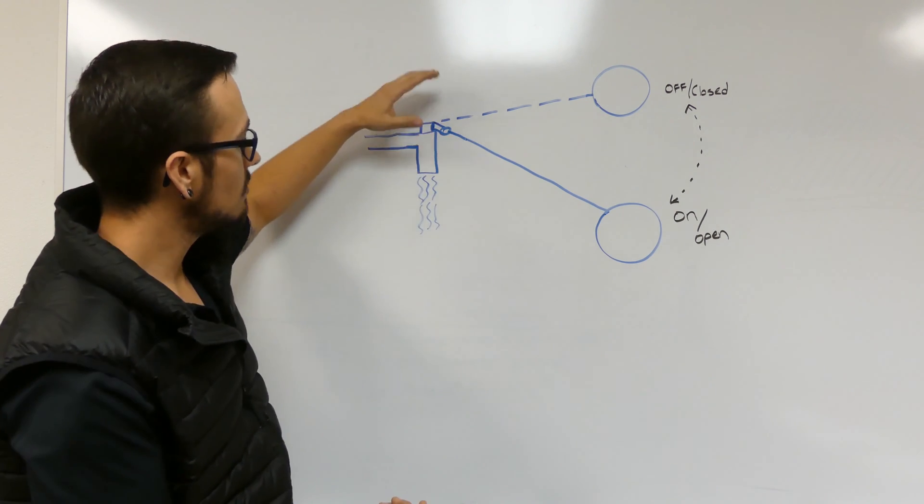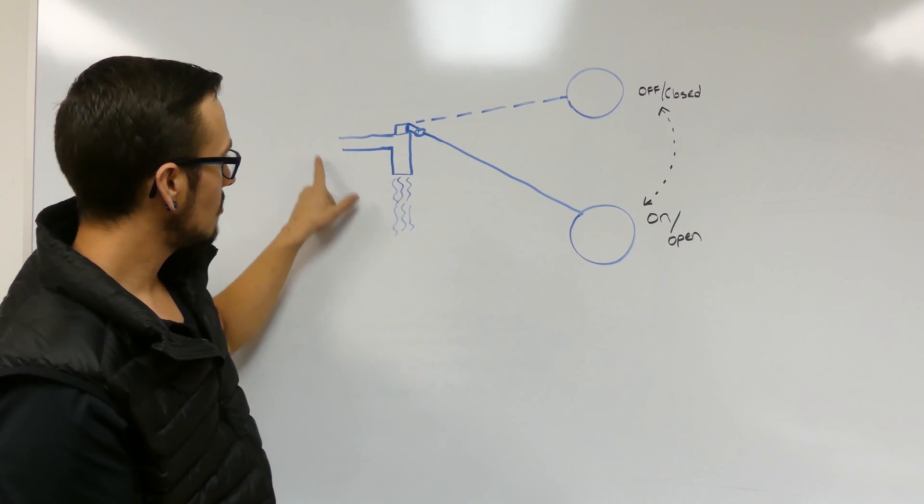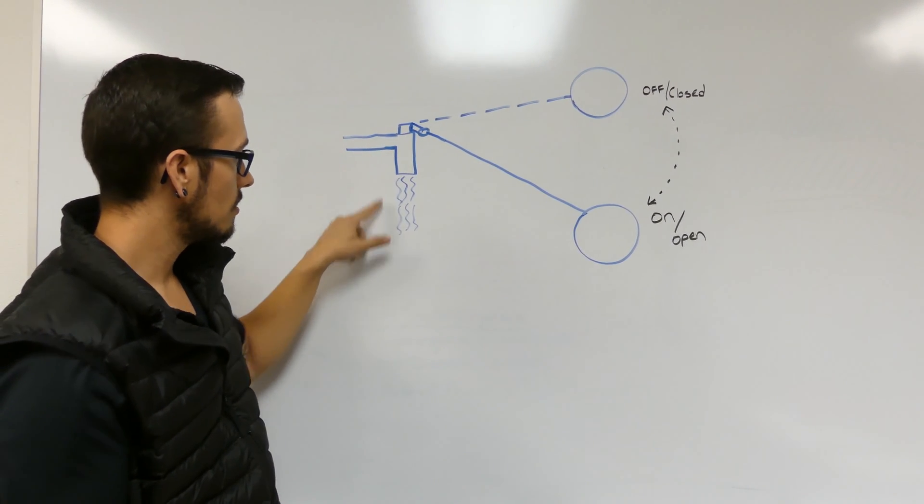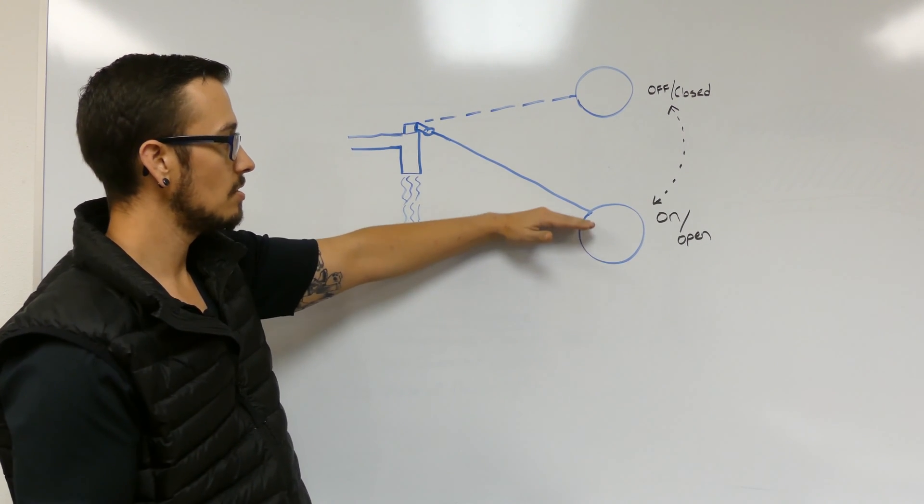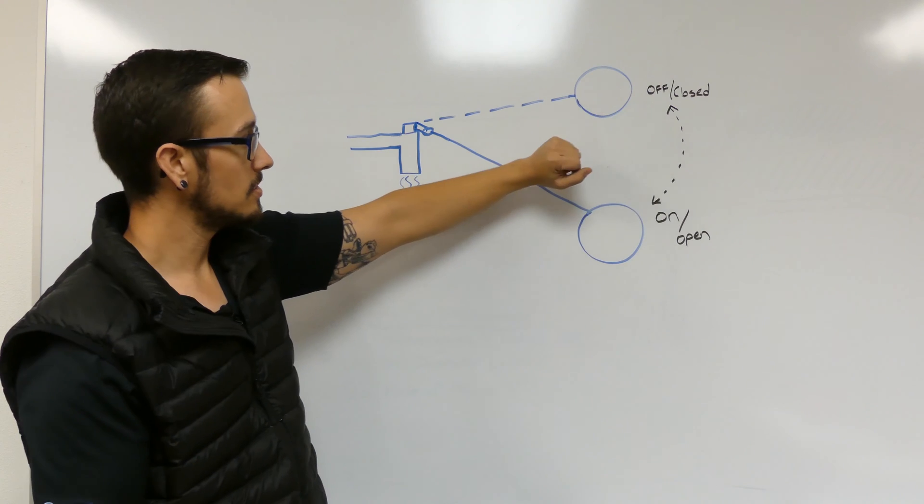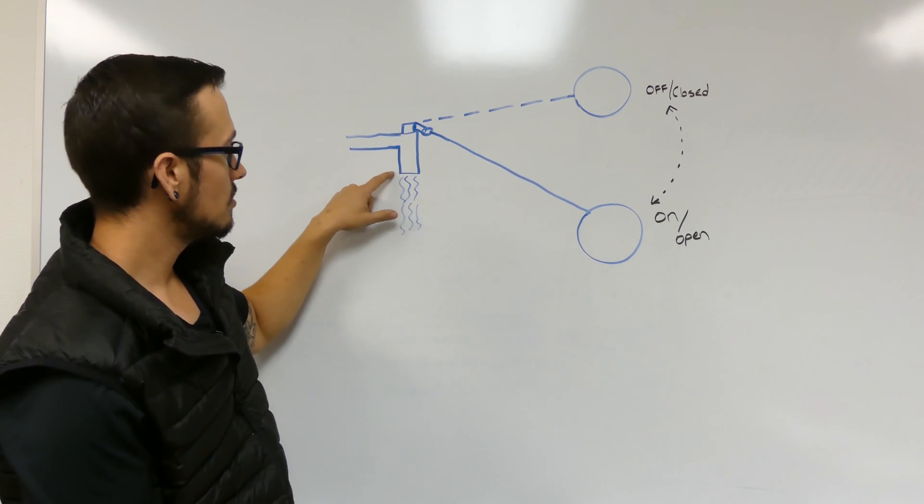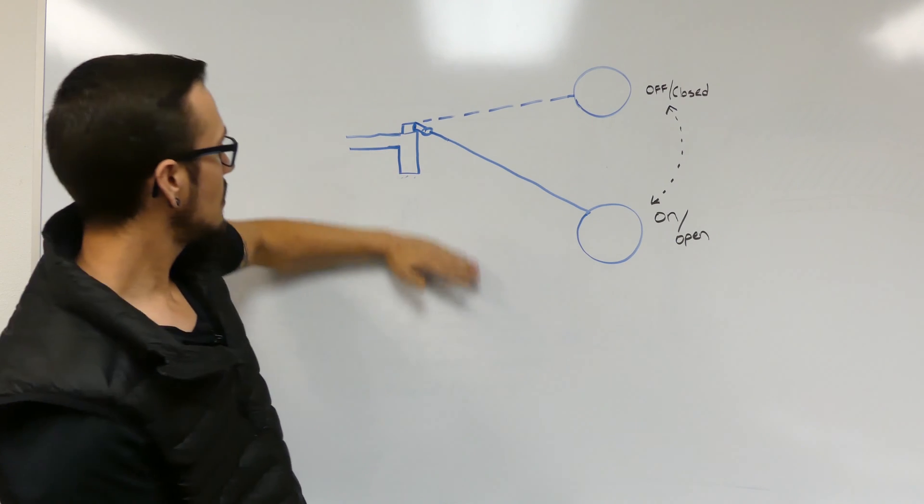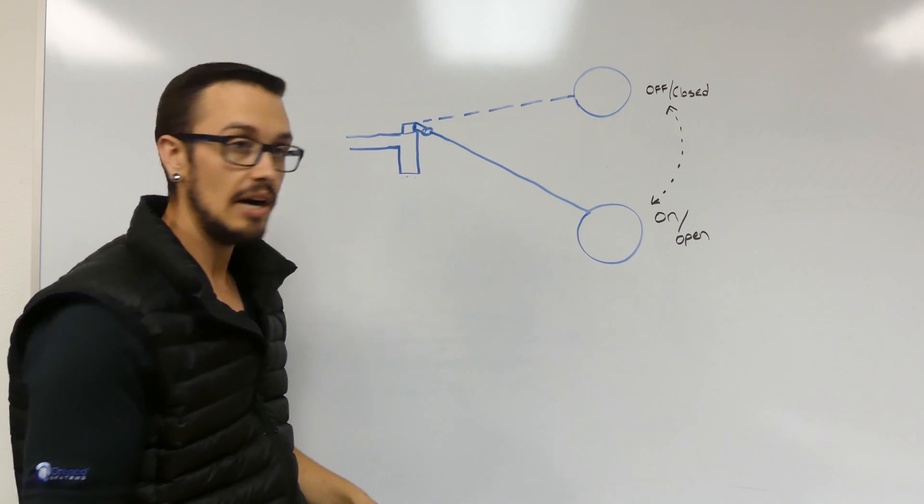And then there's a float in there that operates just the same way as this one I've got drawn here. So when the water level drops, the float goes down and it opens up this valve and allows water to flow in and fill that tank back up.